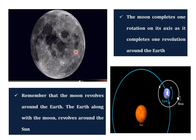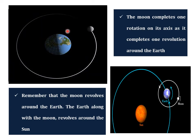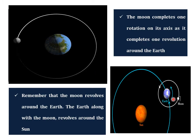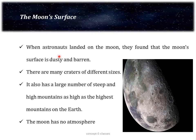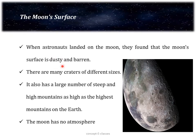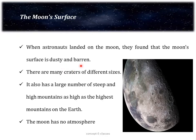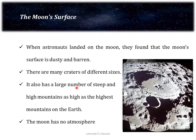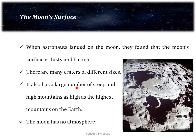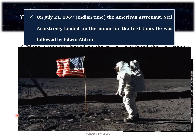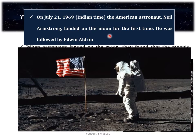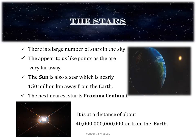The moon completes one rotation on its own axis and one revolution around the earth. We should also remember that the earth, along with the moon, revolves around the sun. When astronauts landed on the moon, they found that the moon's surface was dusty and barren, with many craters of different sizes and a large number of steep, high mountains — some as high as the highest mountains on earth. The moon has no atmosphere. On July 21, 1969 (Indian time), American astronaut Neil Armstrong landed on the moon for the first time, followed by Edwin Aldrin.